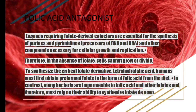Enzymes requiring folic acid derivative cofactors are essential for the synthesis of purines and pyrimidines, because RNA and DNA are made up from purines and pyrimidines and other compounds necessary for cellular growth and replication. Therefore, in the absence of folate, cells cannot grow and divide. To synthesize the critical folate derivative tetrahydrofolic acid, humans must first obtain the preformed folate in the form of folic acid from the diet. In contrast, many bacteria are impermeable to folic acid and other folates, and therefore must rely on their ability to synthesize folate de novo.